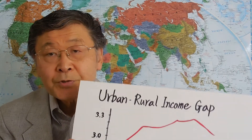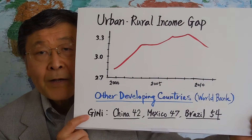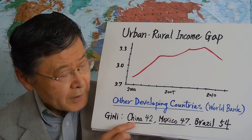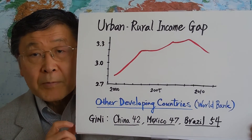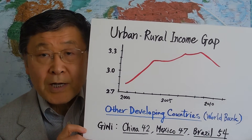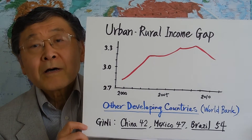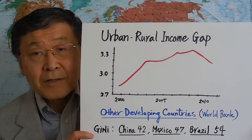But when you compare China with other developing economies, you can see a different picture. Here is a Gini coefficient for China at 0.42. But in other typical developing economies such as Mexico, Brazil, Russia, and South Africa, their Gini coefficients are even higher than that in China. So, among developing economies, China has not been doing too bad. But by its sheer size in the global economy, a widening gap in relative inequality is a problem.